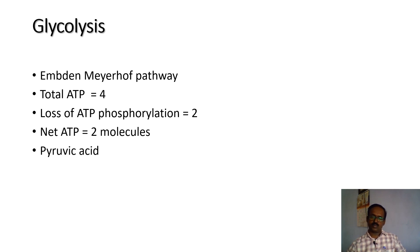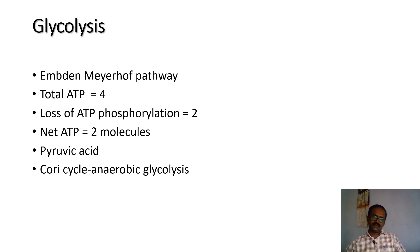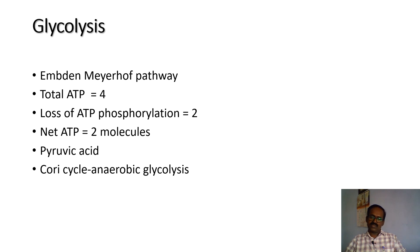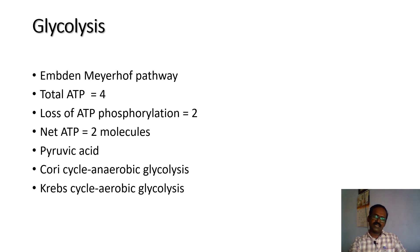The ultimate product from the glycolytic pathway is pyruvic acid. The pyruvic acid from glycolysis is converted to lactic acid without oxygen — this is called anaerobic glycolysis, also known as the Cori cycle. It is mainly utilized for sprinting-like activities such as the 100-meter and 200-meter race, where anaerobic glycolysis provides more energy for the athlete.